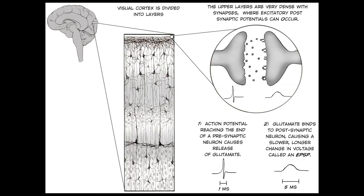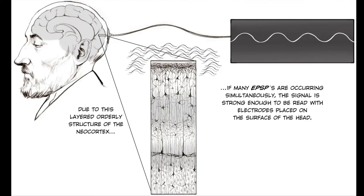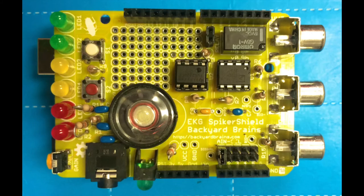The physiological underpinnings of the EEG signal are complex and still a topic of active investigation in the neuroscience community. But we currently understand it to be the summed activity of many synapses in the upper layers of the cerebral cortex. Our shield thus amplifies the electrical activity of these synapses such that we can view them on a computer under the appropriate conditions.